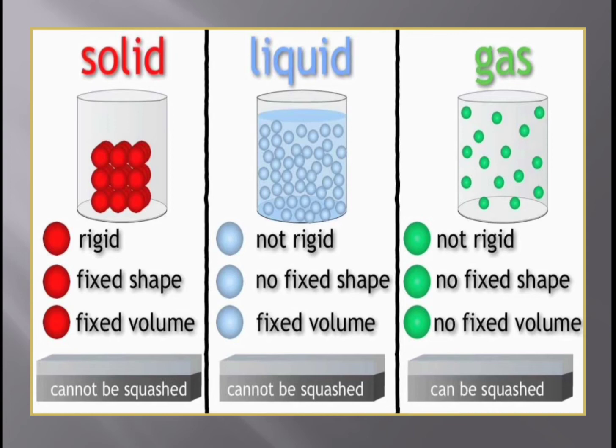These particles can also move in different directions. And they are highly compressible — that means we can press them. That's why we have compressed natural gas, CNG.